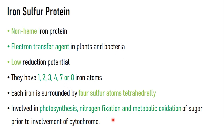Iron-sulfur proteins are involved in photosynthesis, nitrogen fixation, and metabolic oxidation of sugar prior to the involvement of cytochrome. Cytochrome also acts as an electron transfer agent, but prior to cytochrome's involvement, iron-sulfur proteins participate in the metabolic oxidation of sugar — where glucose is oxidized in the presence of oxygen into carbon dioxide, water, and energy. During this process, electrons are transferred by various enzymes and proteins.